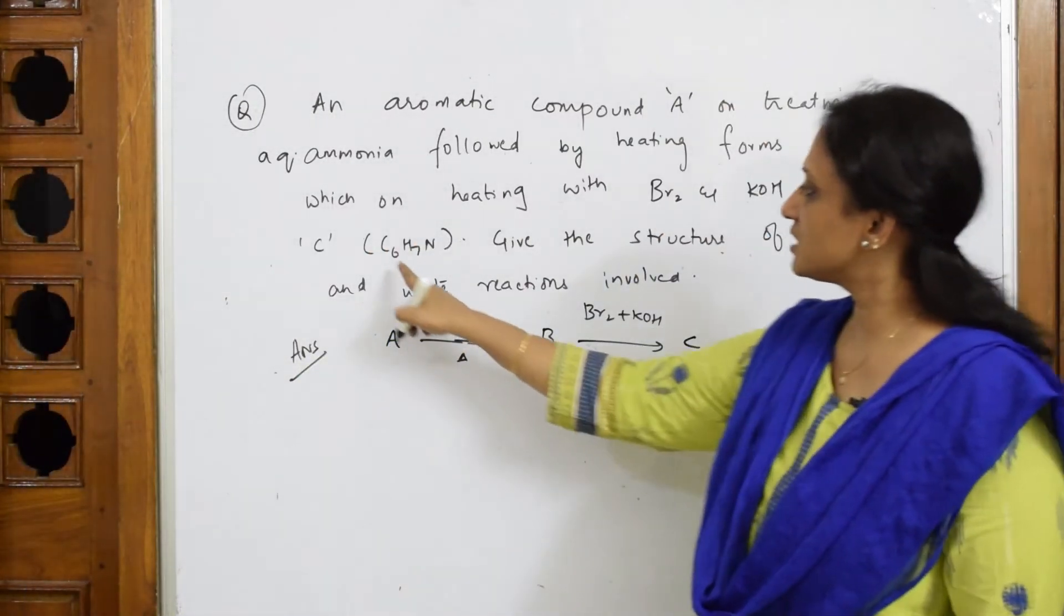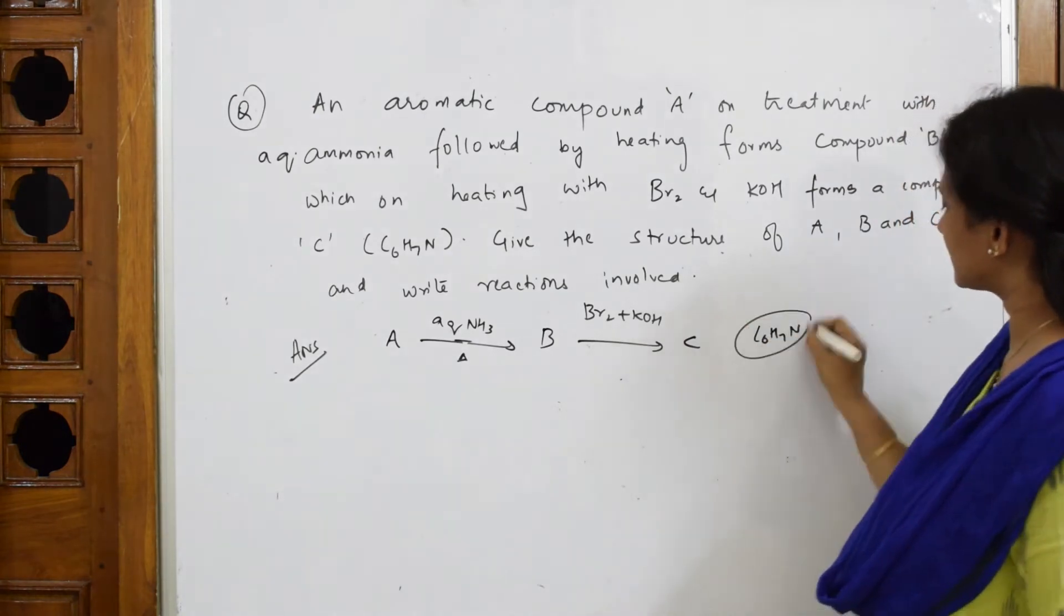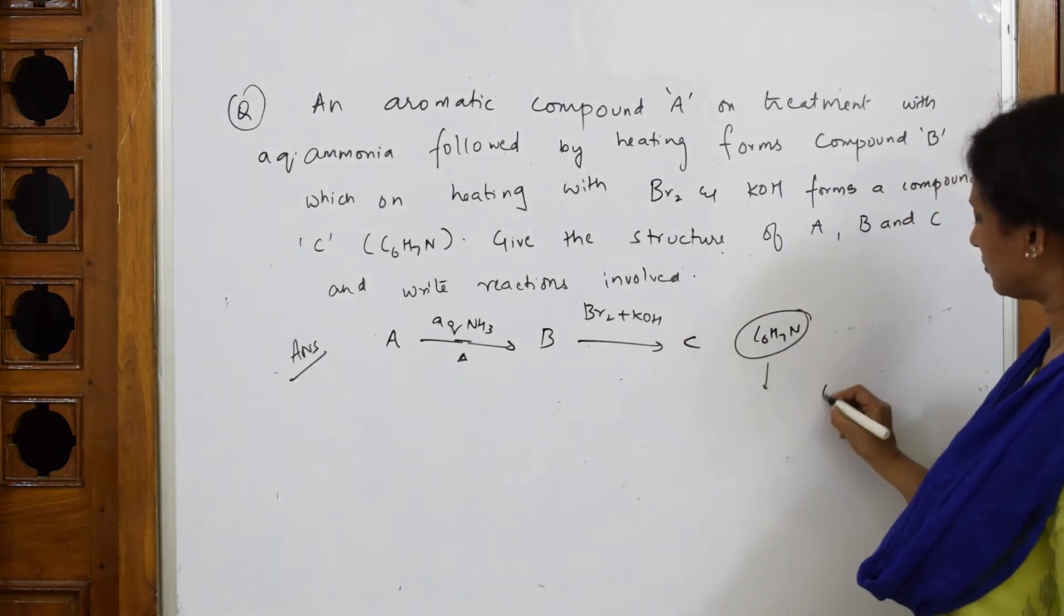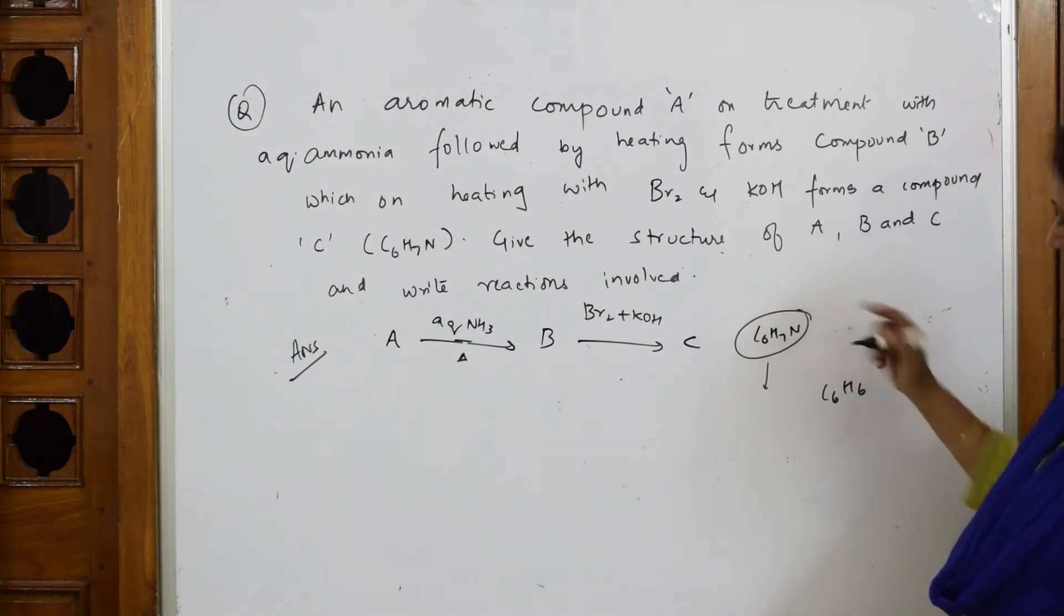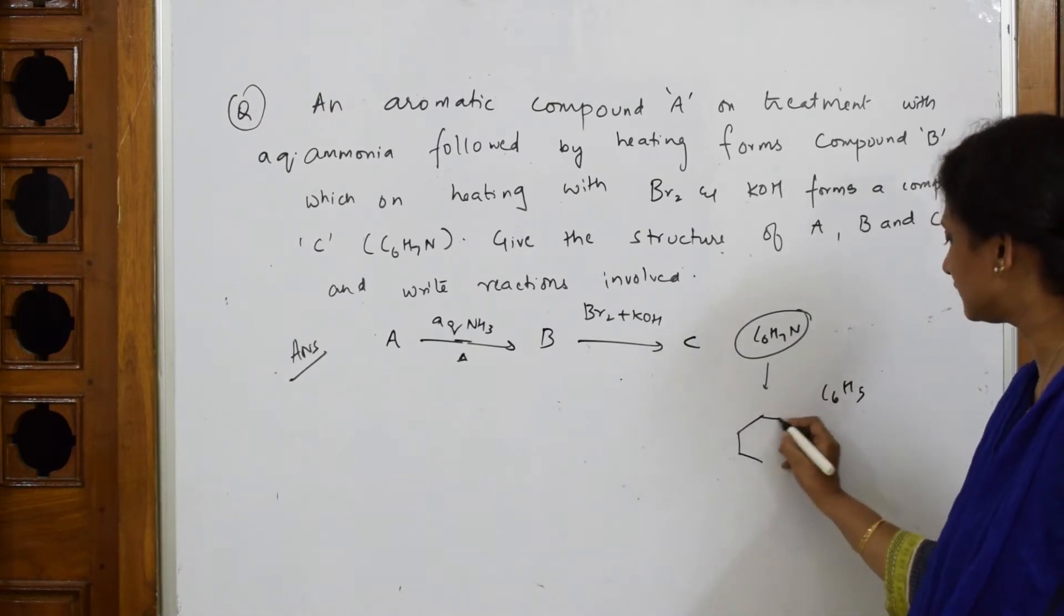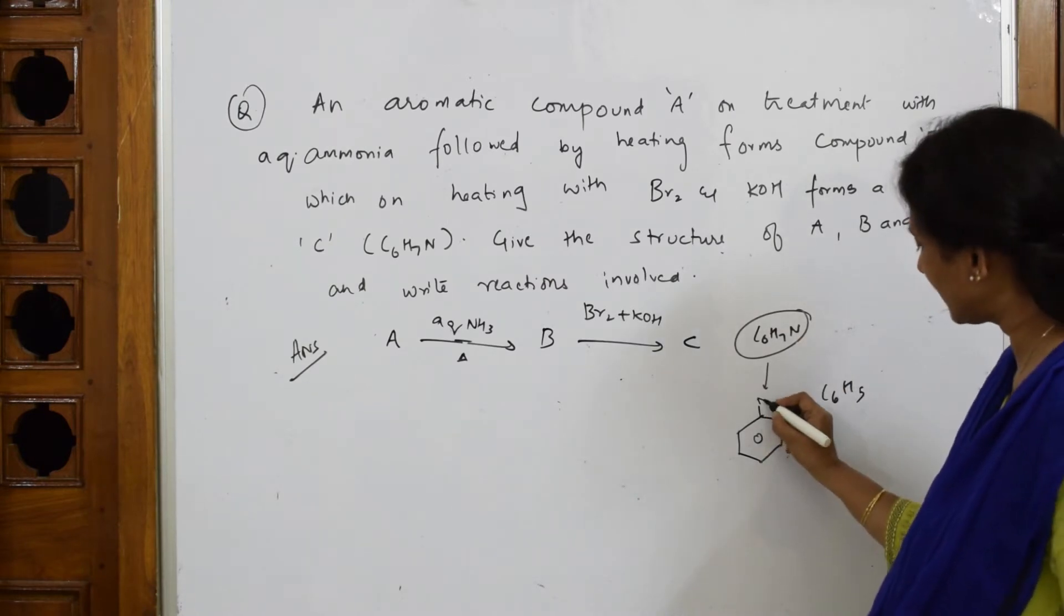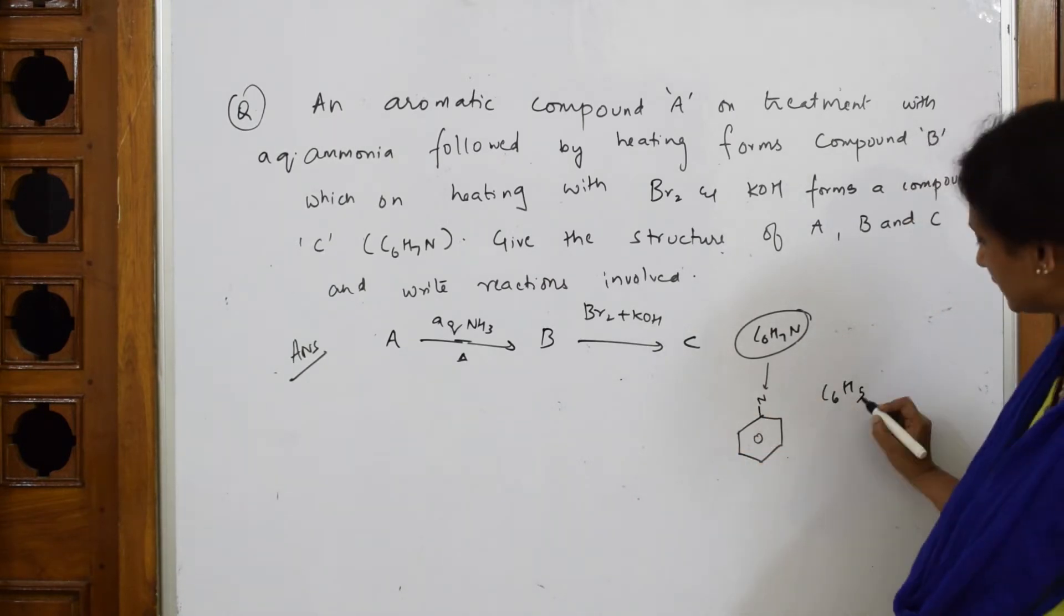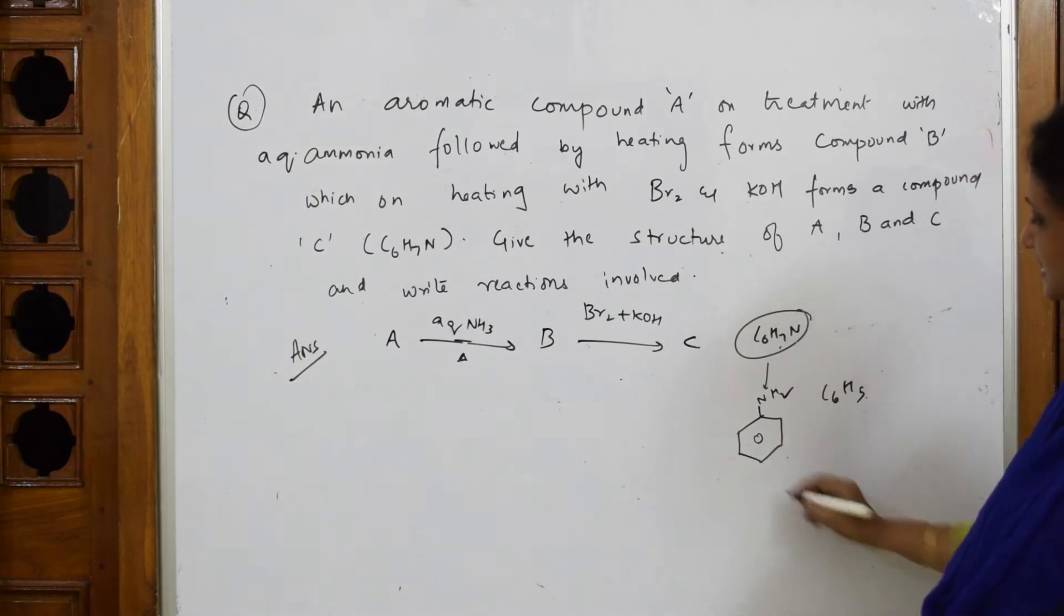What is C6H7N? Let us write. Now your benzene ring formula is C6H6, but when it forms a bond with nitrogen this becomes C6H5. Let us write that: C6H5. Now I still have one nitrogen and two hydrogens. Out of seven, five I've written, that means it is aniline.